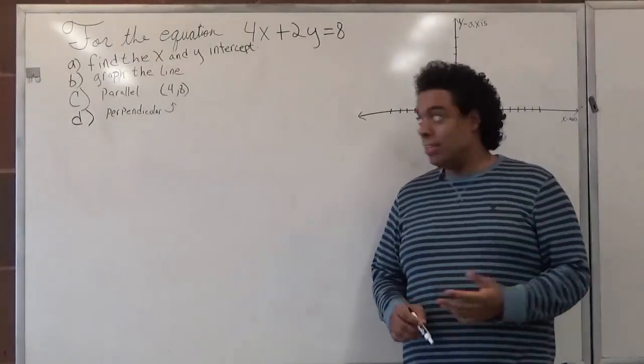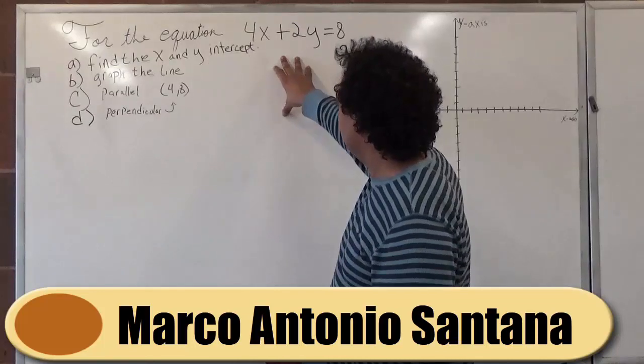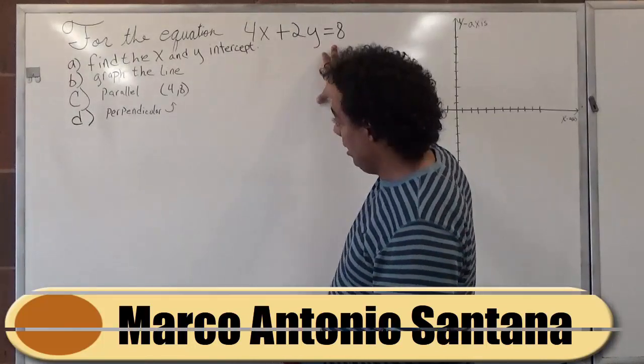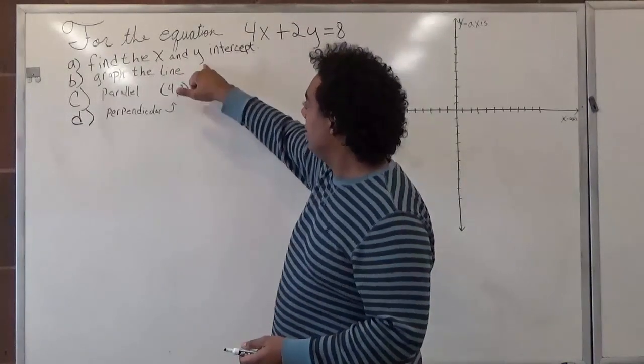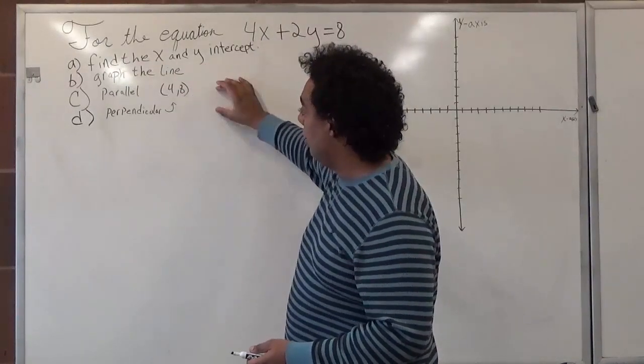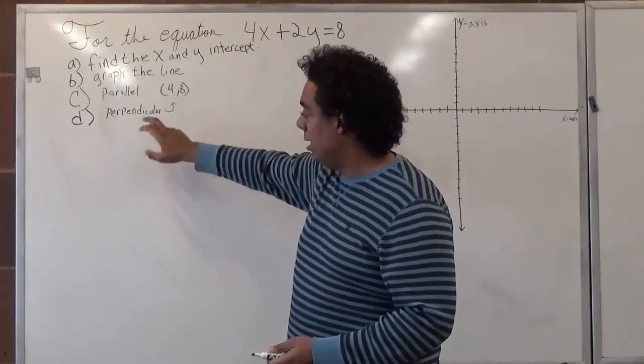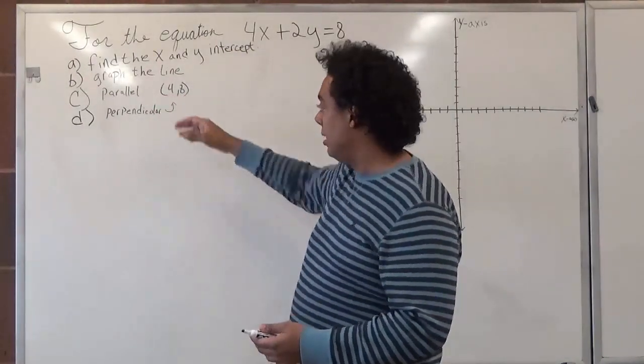Hello, welcome to Help Your Math. In this video, we're going to work on this problem. For the equation 4x plus 2y equals 8, we're going to find the x and y intercept, graph the line, find a parallel line that lands on the point (4, 8), and a perpendicular line that lands on the same point.